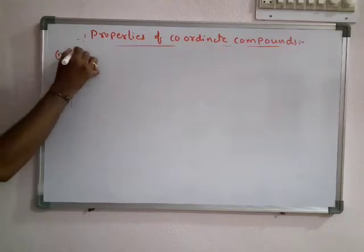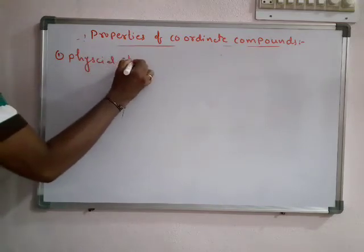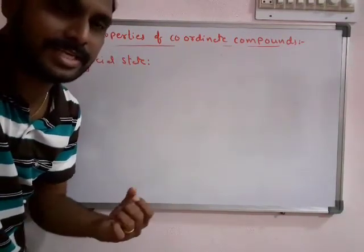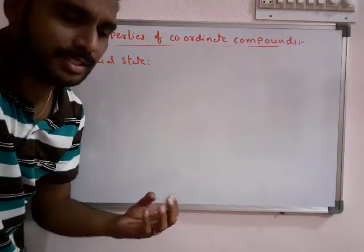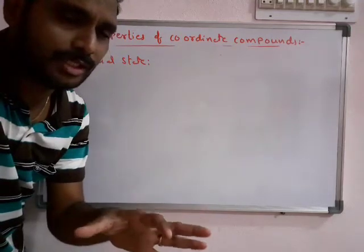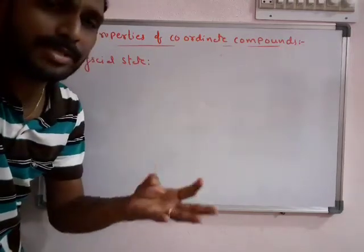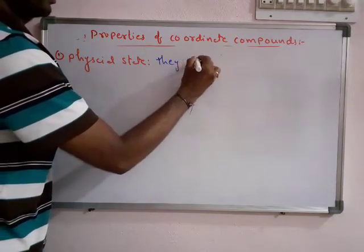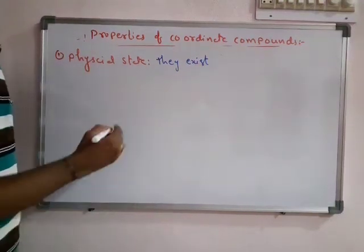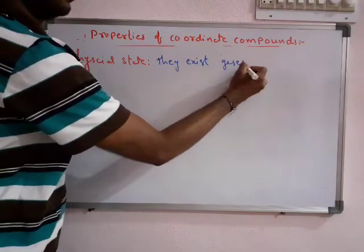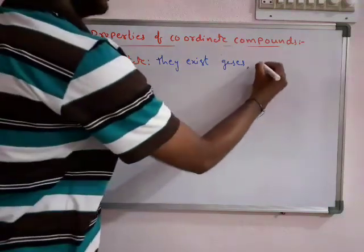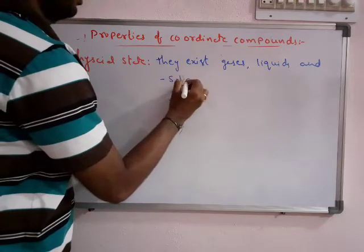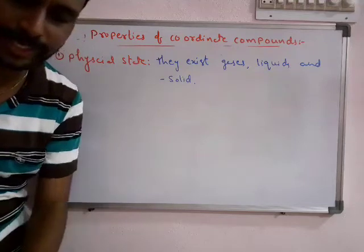The first property is physical state. Ionic compounds are generally crystalline solids. Covalent compounds are generally gases or liquids with a low boiling point. Coordinate compounds exist as gases, liquids, and even solids — combining characteristics of both ionic and covalent compounds.